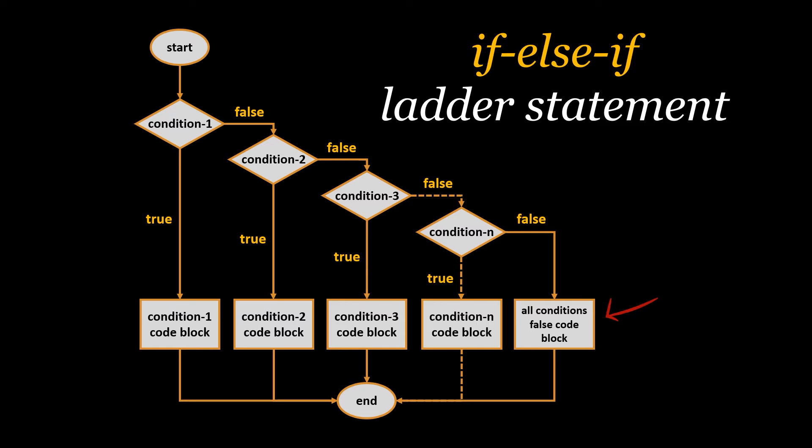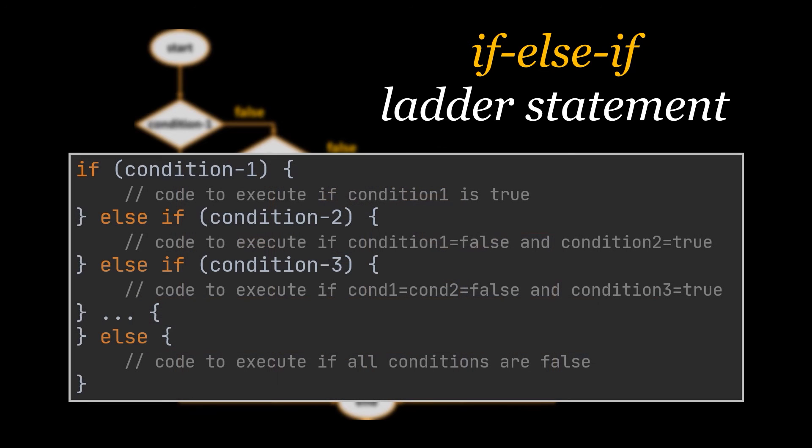This is how the if-else-if ladder is represented in Java. So as already mentioned, in order to execute the code present under condition three, conditions one and two must be false and condition three must be true. This is the only way to reach and execute this specific block of code.